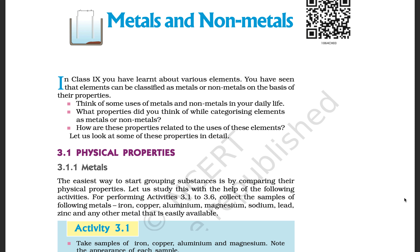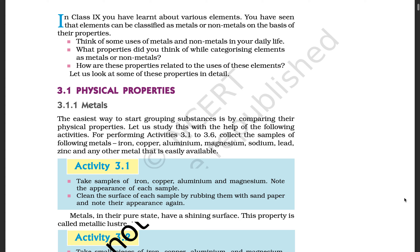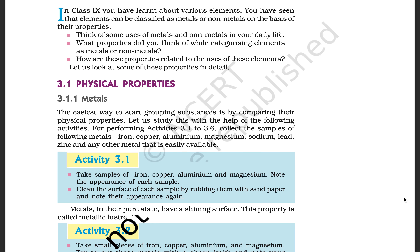What are the metals and non-metals? What are the physical and chemical properties? The easiest way to start grouping substances is by comparing their physical properties. Let us study with the help of the following activities. Collect a sample of metals: iron, copper, aluminium, magnesium, sodium, lead, zinc, and any other metals that are easily available.